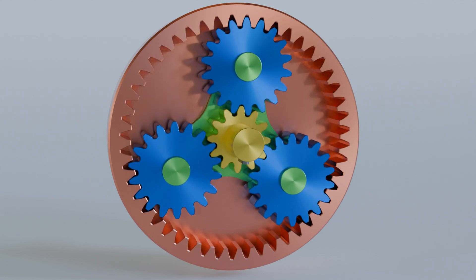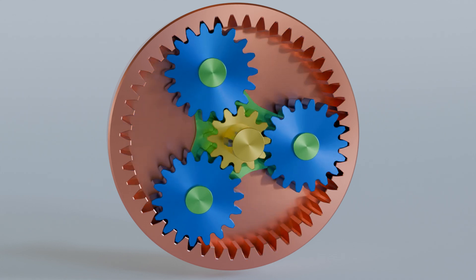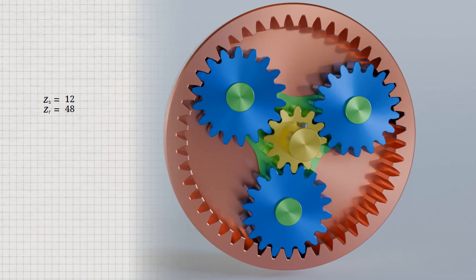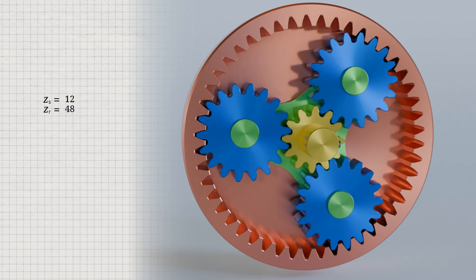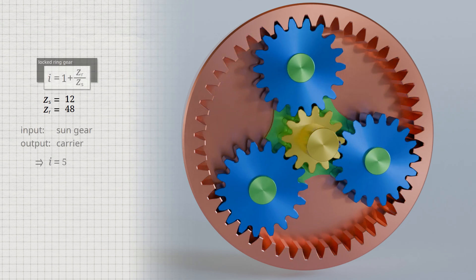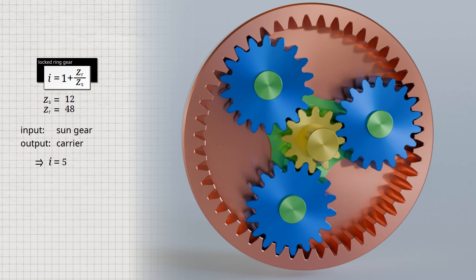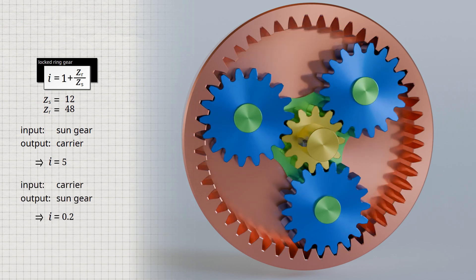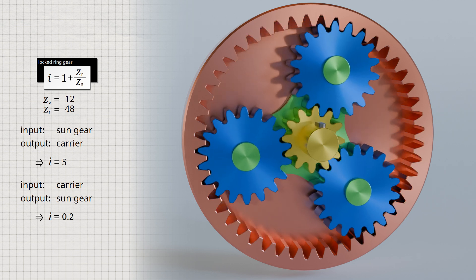Various transmission ratios can be realized with a planetary gear depending on which shaft is used for the input or output. Using the example of a planetary gear with a sun gear with 12 teeth and a ring gear with 48 teeth: the largest transmission ratio of 5 is achieved if the sun gear is used as the input and the carrier as the output when the ring gear is locked. Interchanging the input and output results in the smallest possible transmission ratio of 0.2 as a reciprocal value. The direction of rotation of the input and output shafts remains the same in both cases.